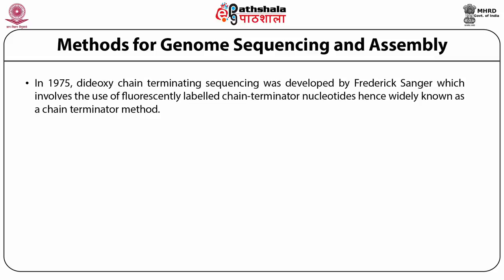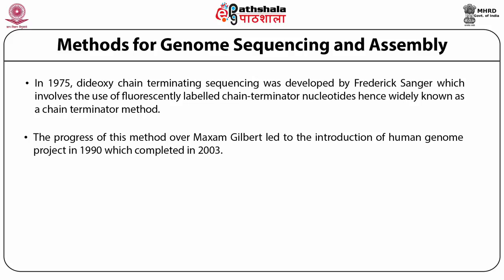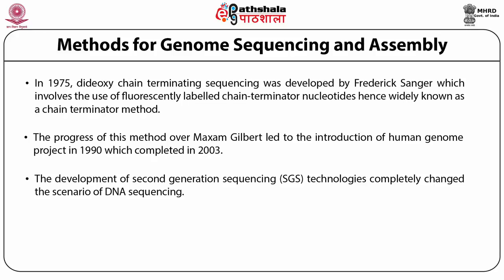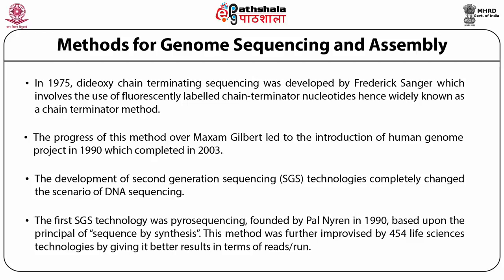In 1975, the dideoxy chain terminating sequencing was developed by Frederick Sanger, which involves the use of fluorescently labeled chain terminating nucleotides, hence widely known as the chain terminator method. The progress of this method over the Maxim-Gilbert method led to the introduction of the Human Genome Project in 1990, which was completed two years earlier than its scheduled completion in 2003. The development of second generation sequencing technologies completely changed the scenario of DNA sequencing.